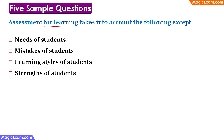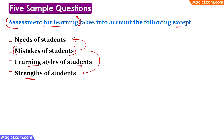Question: Assessment for learning takes into account the following EXCEPT. Assessment for learning is part of the teaching learning process and is used for making sure children actually understand what is being taught. Therefore, it takes into account the needs of the students, the learning styles of different students in the classroom, and the strengths of the students. It does not give a lot of importance to the mistakes of the students — through mistakes we are trying to identify needs, strengths, weaknesses, and learning styles, but it does not focus on mistakes as the key metric. Therefore, the answer is the mistakes of the student.